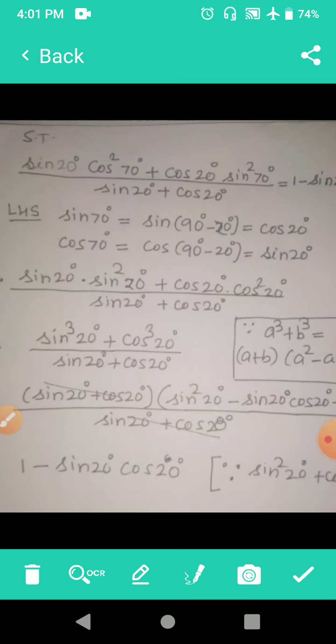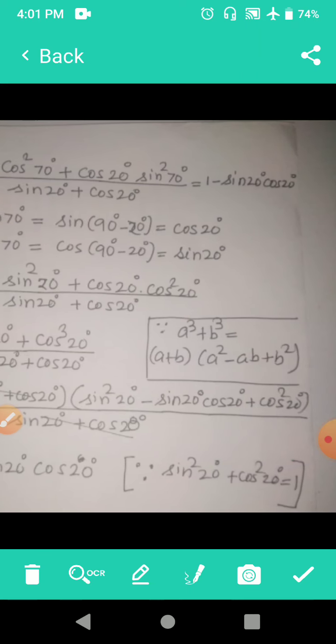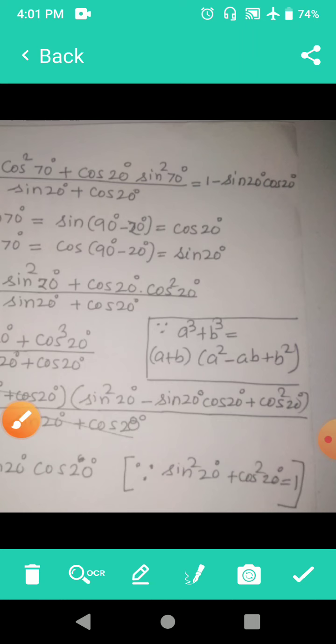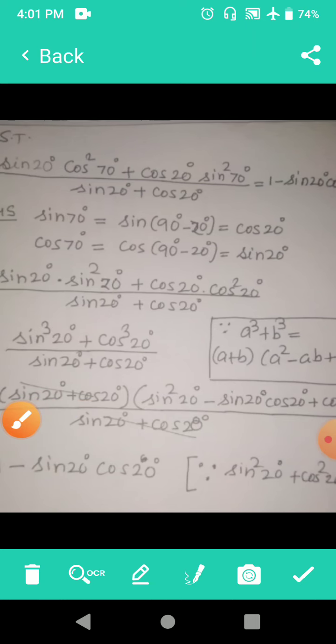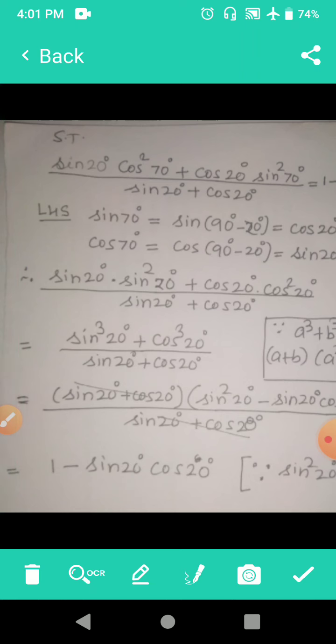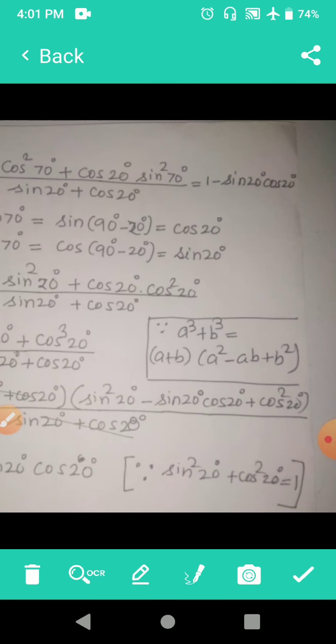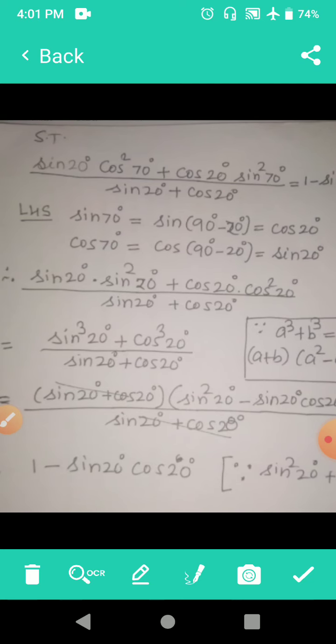Now look at the numerator here which is of type a³ + b³. So a³ + b³ is equal to (a + b) × (a² - ab + b²). Now same formula I am applying here, a is equal to sin20 and b is equal to cos20, which will give you (sin20 + cos20) × (sin²20 - sin20·cos20 + cos²20) divided by sin20 + cos20.